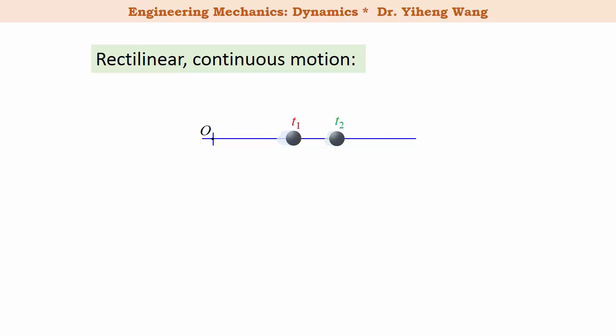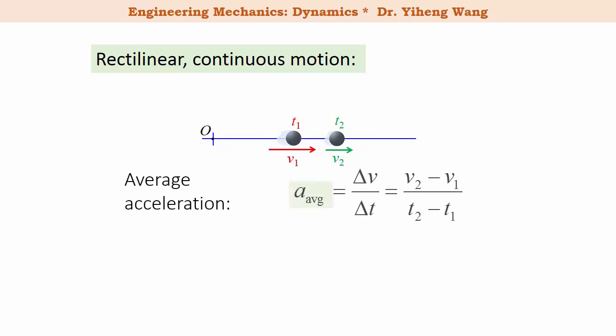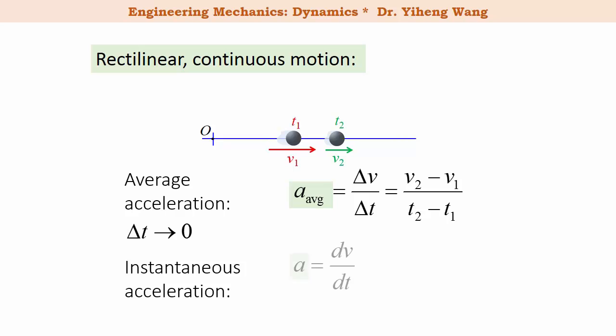If at time t1 the object has a velocity of v1, and at time t2 its velocity is v2, then the average acceleration is defined as the change in velocity over the change in time. When the change in time delta t approaches zero, the average acceleration becomes the instantaneous acceleration, dv over dt, or the time derivative of the velocity.